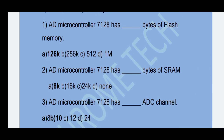Next question: The ADuC7128 microcontroller has how many bits of flash memory? Option A — 128k is the correct answer.